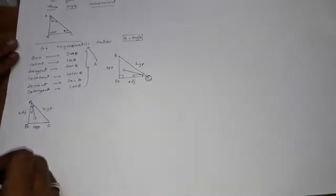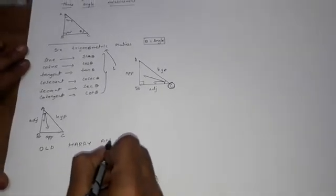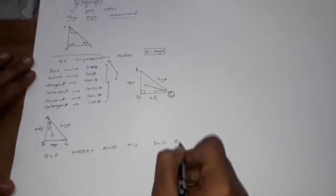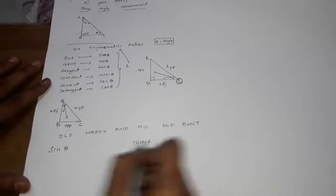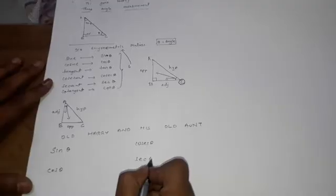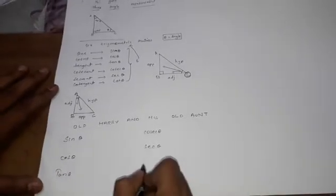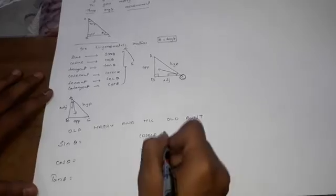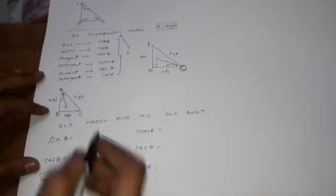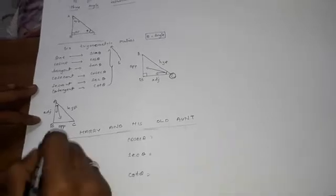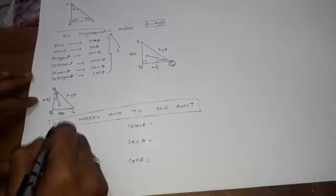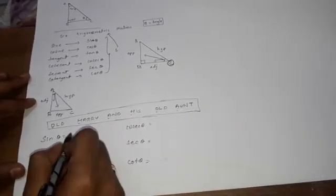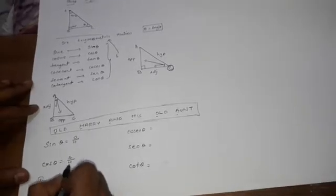To learn the sides of the trigonometric ratios, we have a simple sentence: 'Old Harry And His Old Aunt.' Write the six trigonometric ratios: sine theta, cosecant theta, cos theta, secant theta, tan theta, and cot theta. If you learn this sentence, it will help you write the sides for each trigonometric ratio — take the initials of each word: Old Harry And His Old Aunt.